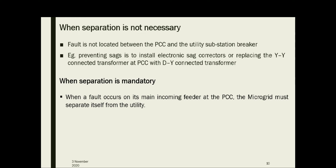These two options demonstrate how protection considerations and design options must be considered together in developing an economic microgrid. Installation of an electronic sag protector is actually costlier, but replacing a star-star interconnecting transformer with a delta-star one is a cheaper solution, even though it is less effective. When designing your microgrid, you should consider these possible solutions when separation is not necessary, and how to manage voltage unbalance.